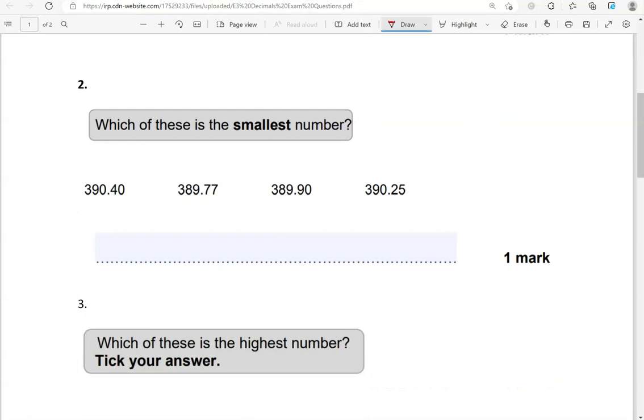Which of these is the smallest number? So, 390.40, 389.77, 389.90, 390.25. So, the numbers before the decimal point are not the same in this question. We've got 390, 389, which is smaller, 389 again, and 390. So, 390 is greater than 389, so automatically these are going to be the greatest out of the 4. So, they can't be the smallest.